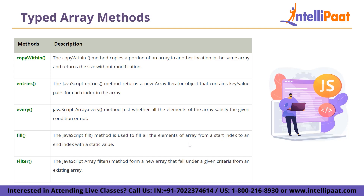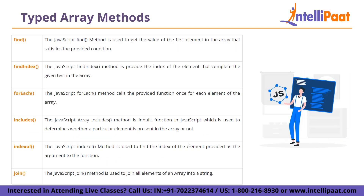Next is the filter method, which forms a new array of elements that fall under a given criteria from an existing array. Then comes the find method, which is used to get the value of the first element in the array that satisfies the provided condition. Then comes findIndex, which provides the index of the element that completes the given test in the array. Next is the forEach method, which calls the provided function once for each element of the array.